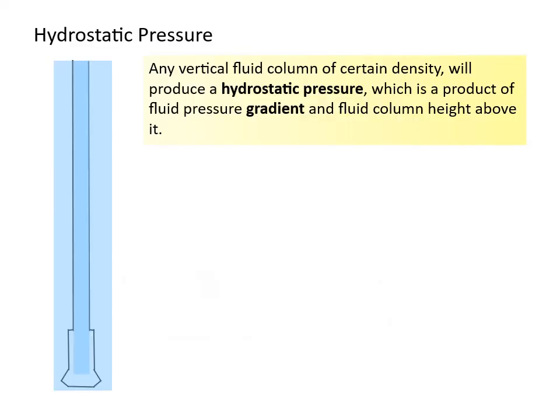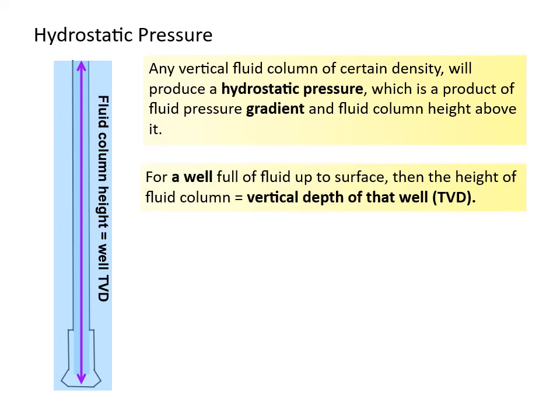Any vertical fluid column of certain density will produce a hydrostatic pressure, which is a product of fluid pressure gradient and fluid column height above it. For a well full of fluid up to surface, the height of fluid column is equal to the true vertical depth of that well, TVD.